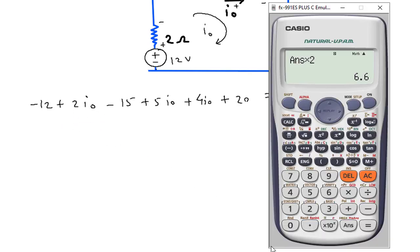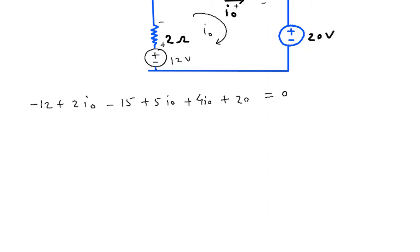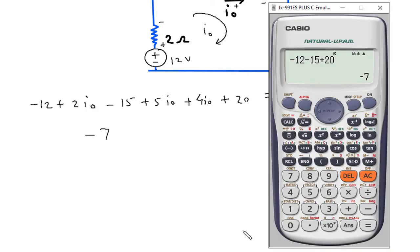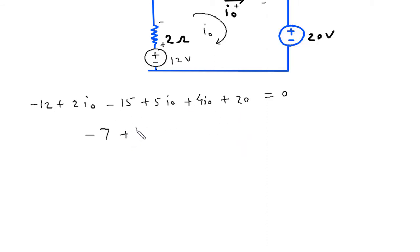So, this will be, minus 12, minus 15, then plus 20, minus 7, and this will be, 2, plus 5, plus 4, 11 I O is equal to 0.